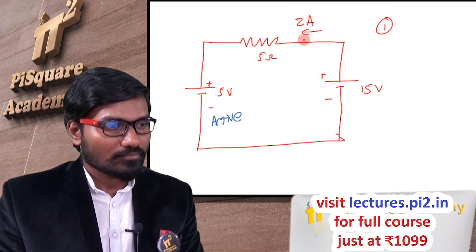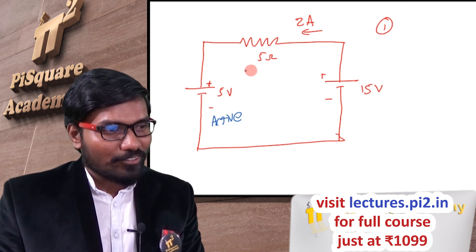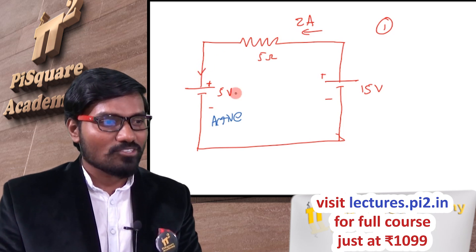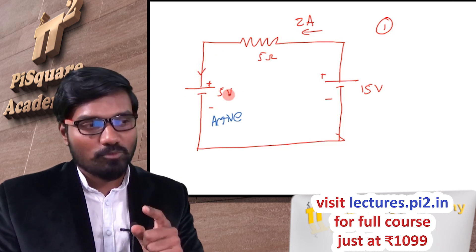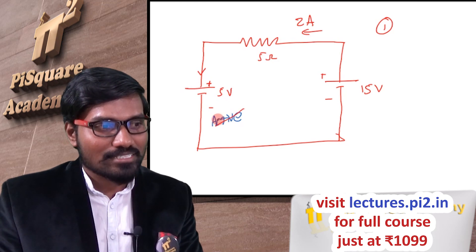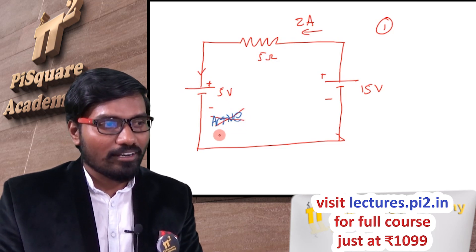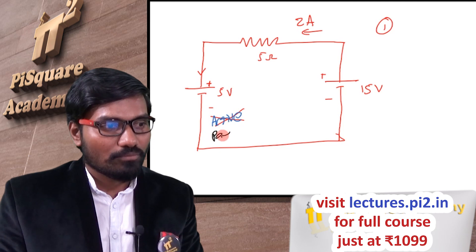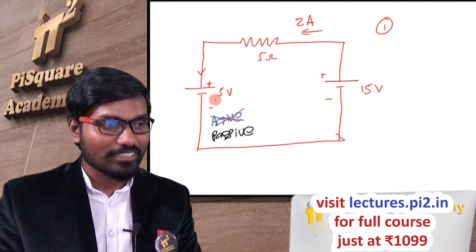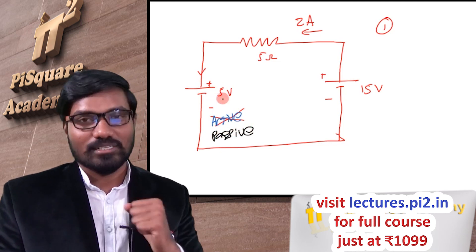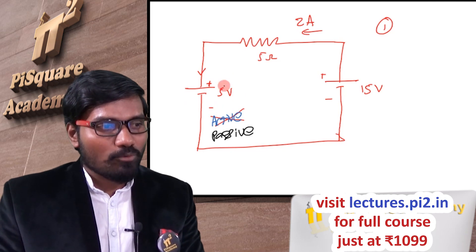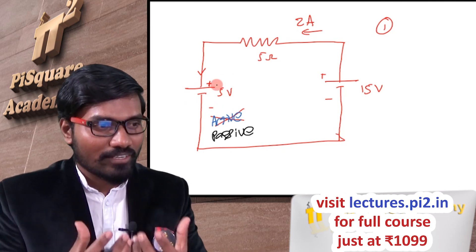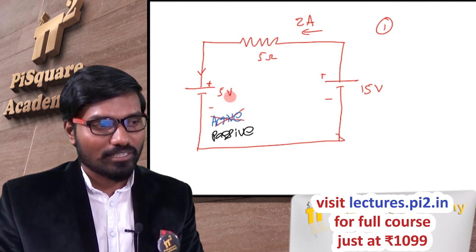These 2 amperes of current are now entering into the positive terminal of the 5 volt source. So the same 5 volt source which was earlier acting as an active source will now act as a passive element. This 5 volt source is now consuming the power; earlier it was delivering the power, now it is consuming the power.